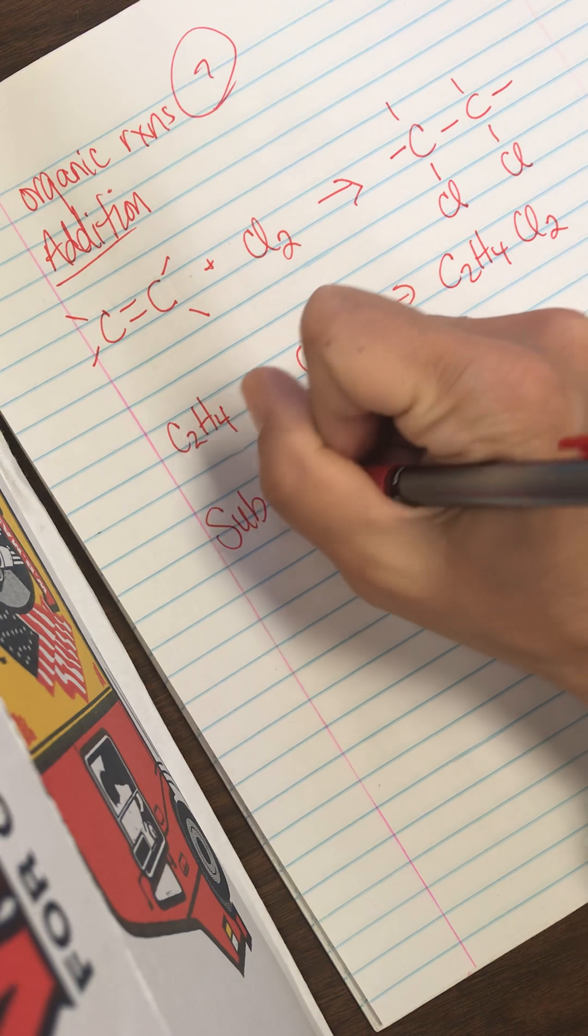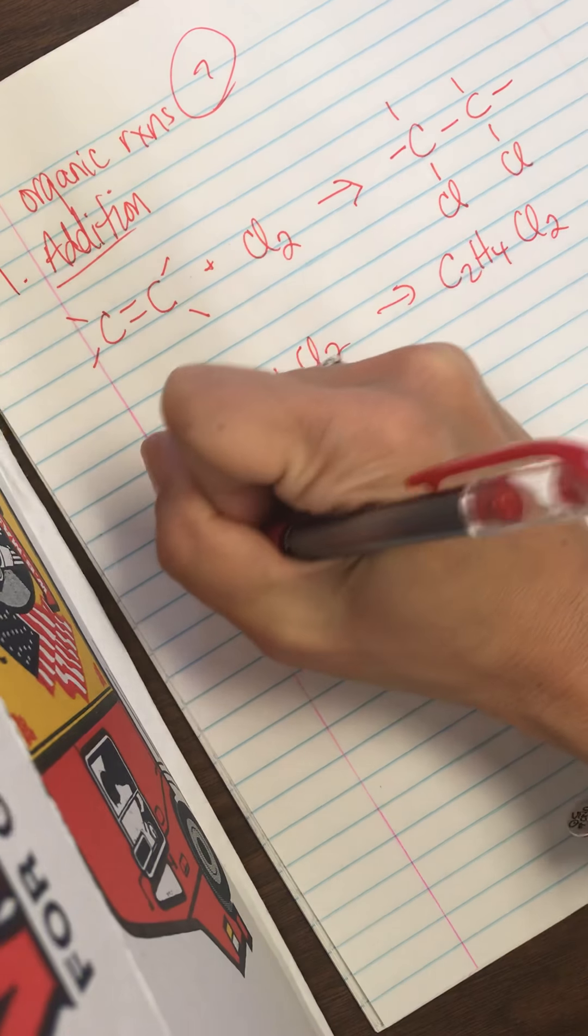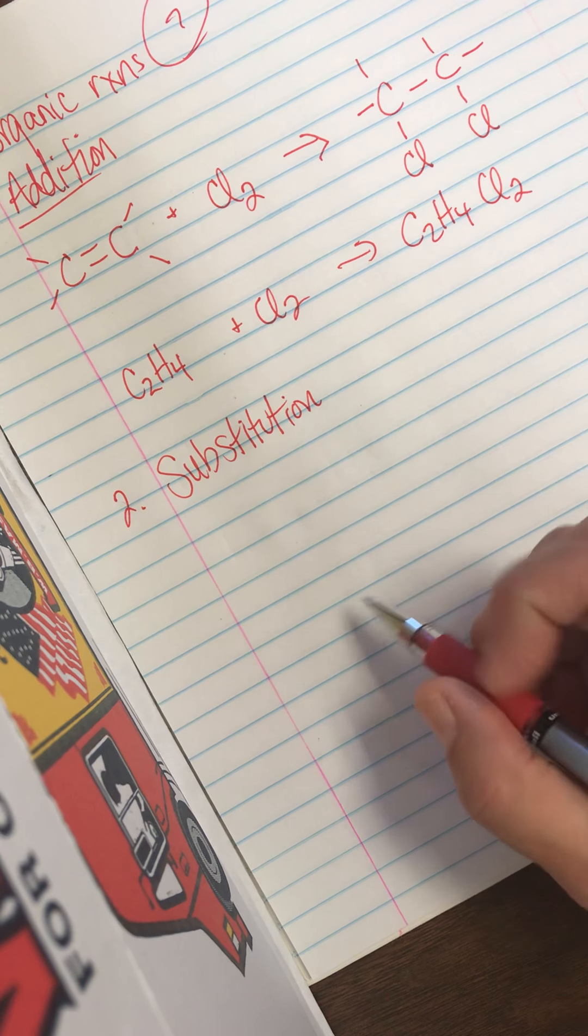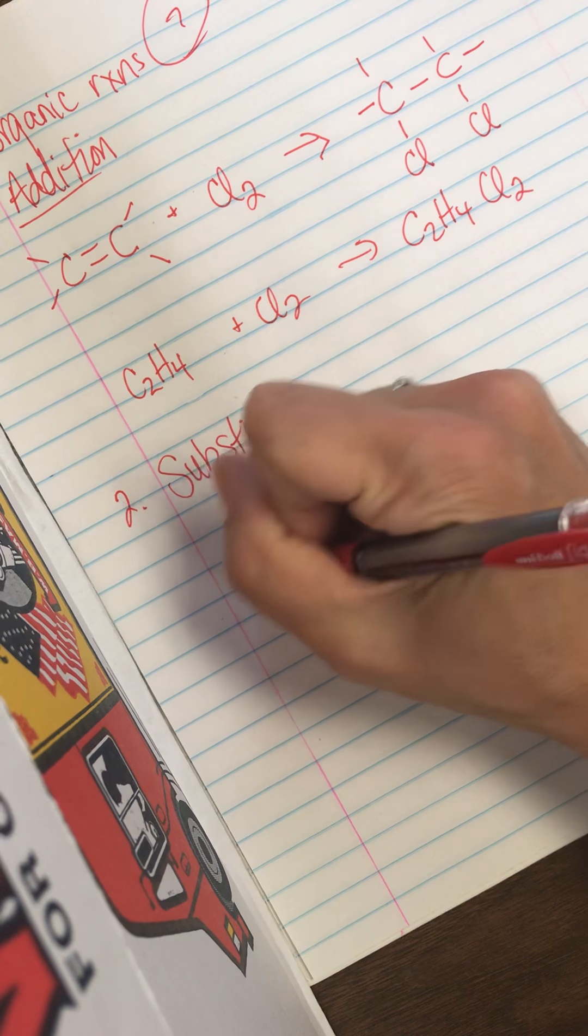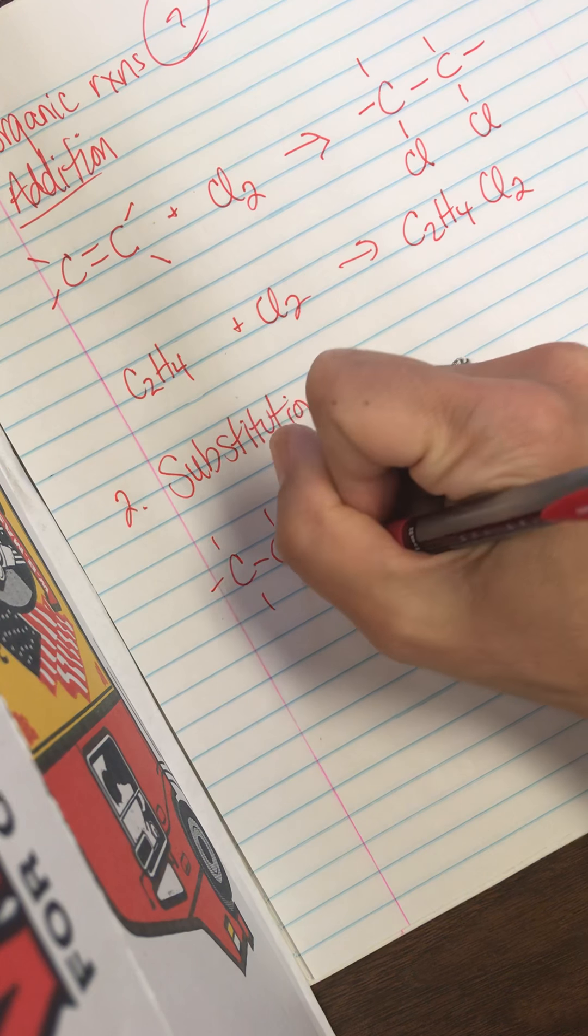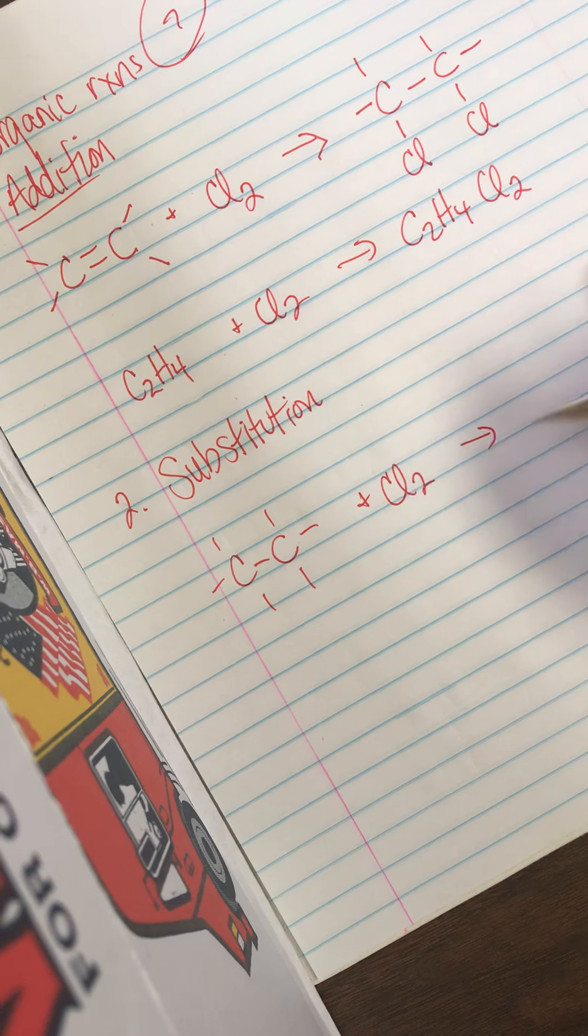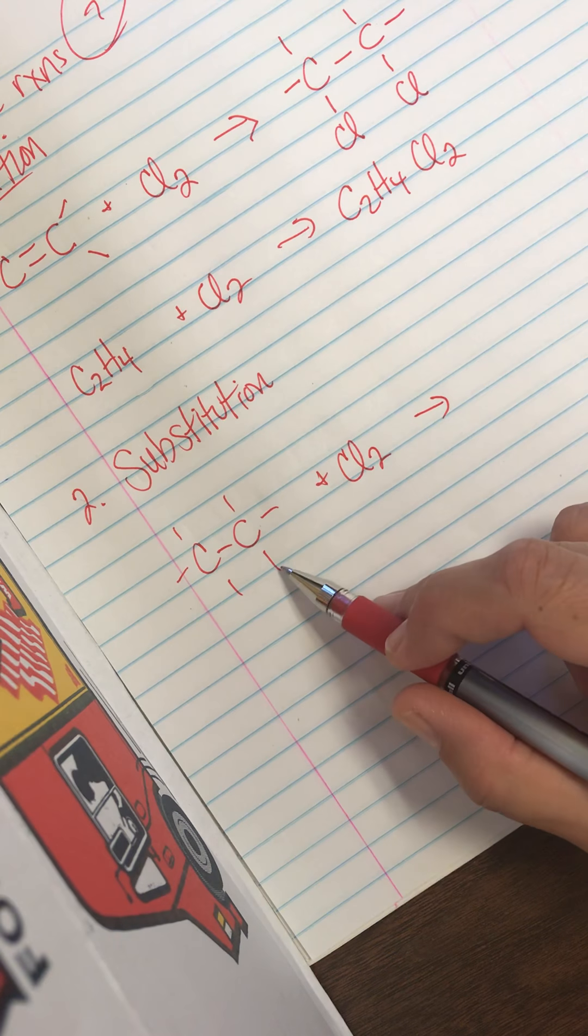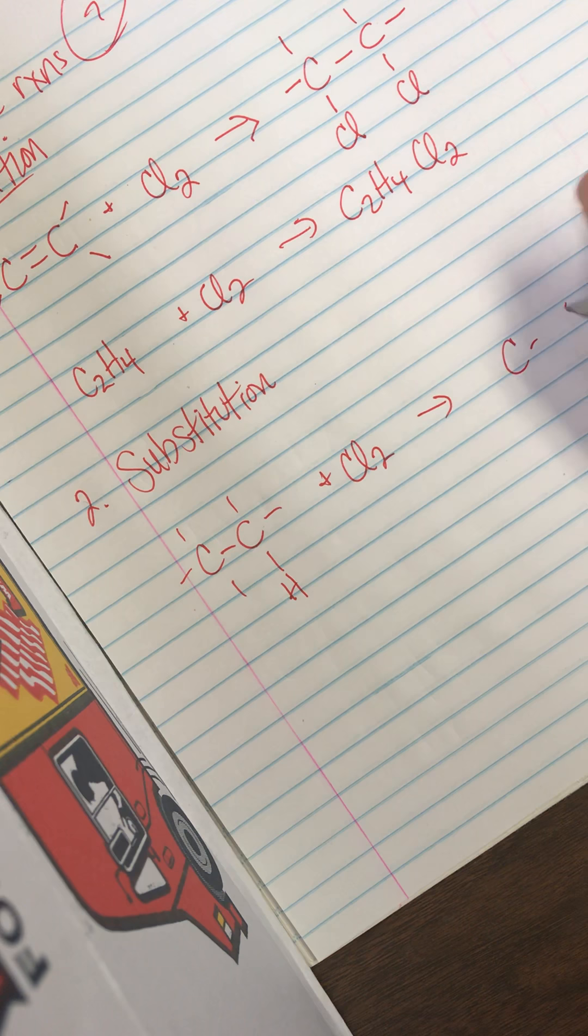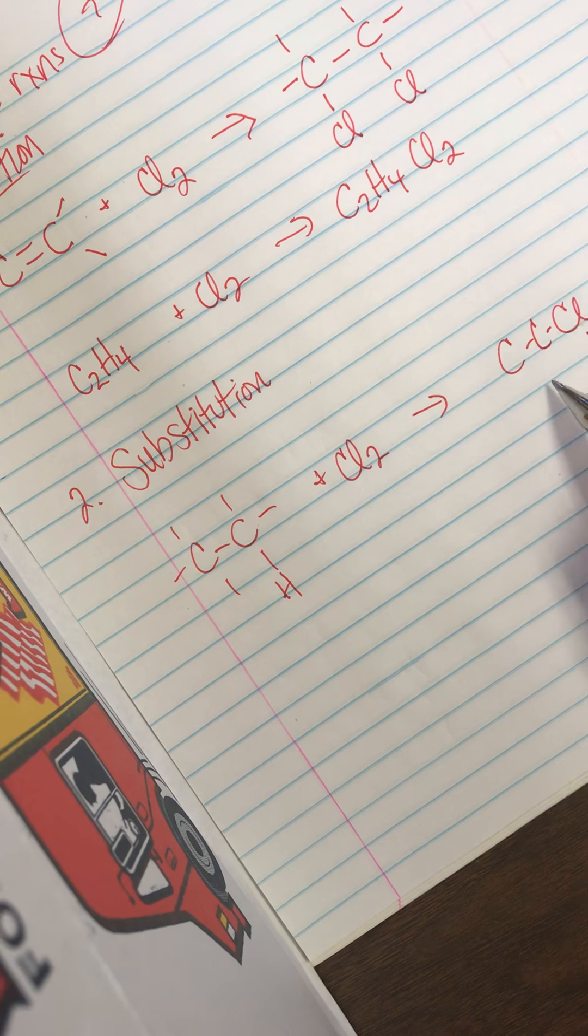All right. Next one, substitution. The great thing about these organic reactions is that they really are what they sound like they're going to be. So a substitution means a switch. So this time I start with an alkane, not unsaturated. And I'm still going to have my chlorine, but this time I'm just going to switch one of these H's with one of these Cl's. So I end up with a chlorine here.